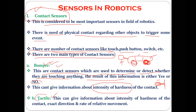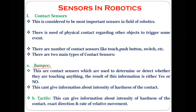For example, if a car is stuck against a wall, how hard it is touching that wall — the hardness information — is not given by the bumper sensor. The bumper sensor only tells you that it is touching. That additional information — the intensity of hardness — is given by the tactile sensor.